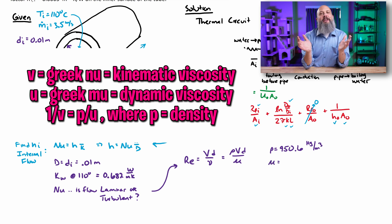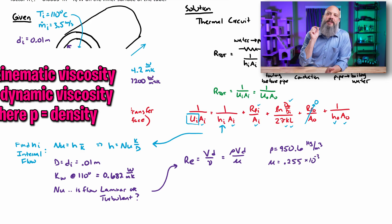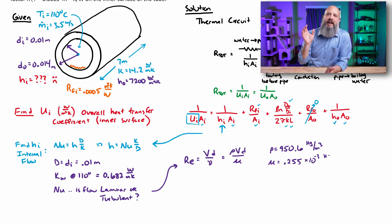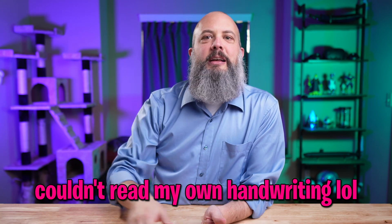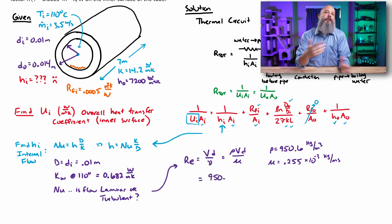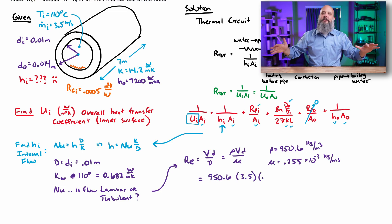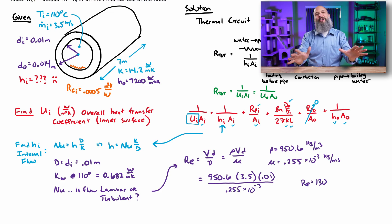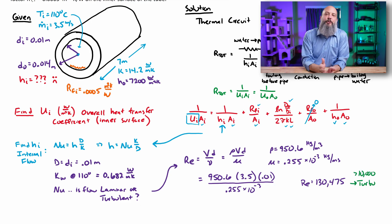Use whichever one is in the tables that you're given in your textbook. For me, I got density of 950, mu of 0.255 times 10 to the negative whatever. And plug all of this in to my Reynolds number equation. 130,000 for my Reynolds number. This is definitely turbulent flow, greater than 10,000 when we're talking internal flow. Greater than 10,000 is turbulent. So turbulent, we're going to use the turbulent equations.